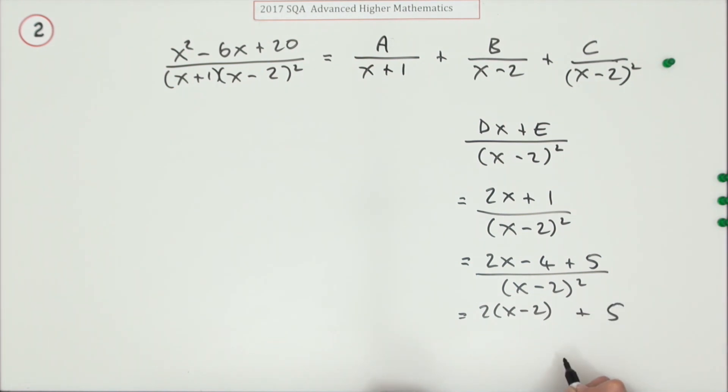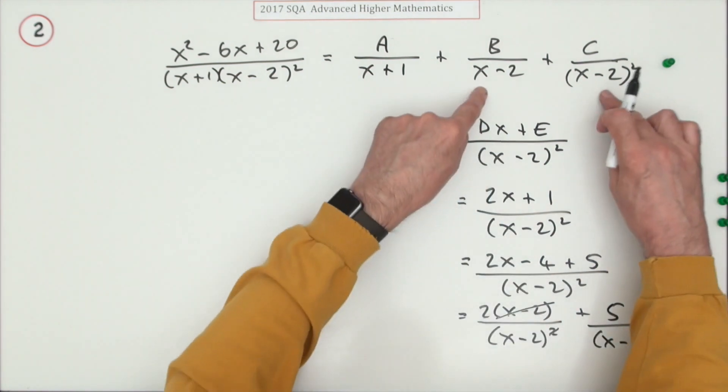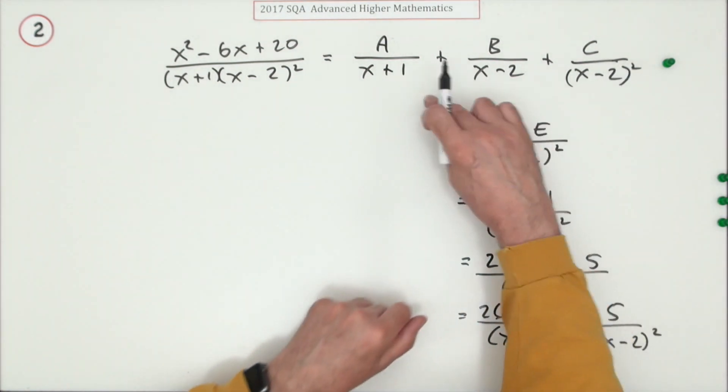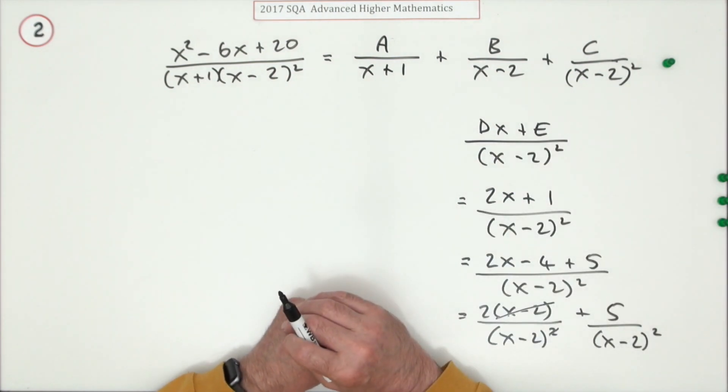If you've got a quadratic that's factorized, this can be simplified by this little device. Notice it's x minus two, so if the top was 2x minus four, I'd have a common factor. I can make the numerator into 2x minus four simply by adding five. Now I can separate that - 2x minus four is two times x minus two.